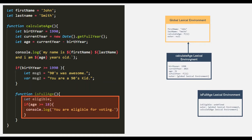That's why isFullAge will have access to all its parent scope variables and functions stored inside the lexical environment of calculateH. And because of this scope chain, it will also have access to the lexical environment of global scope. One important thing to remember here is that we only have a reference to the outer scope's variables and functions — they are not being copied inside this lexical environment. It is only keeping the reference to its outer scope.